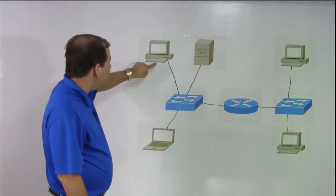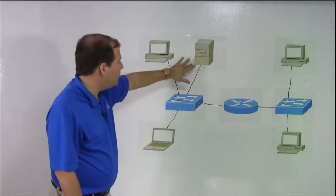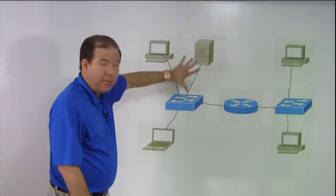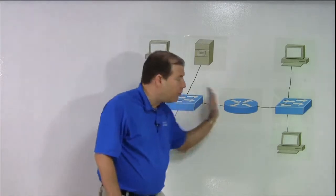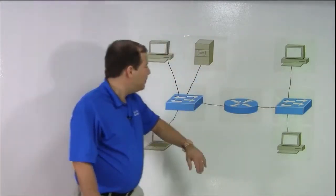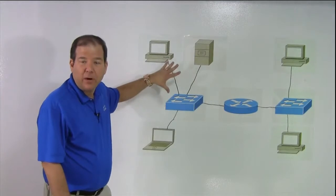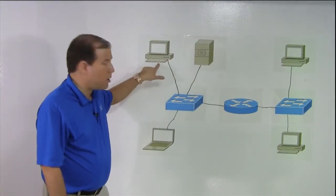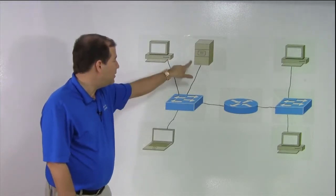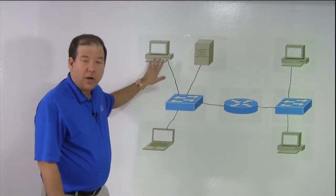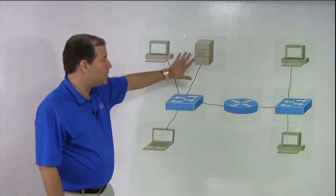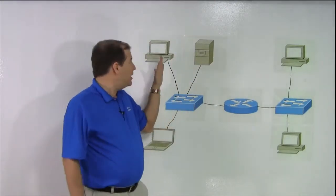For example, if this client wants to talk to this server, it's in the same address space. It doesn't need to go through the router. Nobody over here needs to be bothered with any of the traffic on this side of the router if we're just talking from this client to this server. The traffic is going to go into the switch, and it's going to go up to the server.